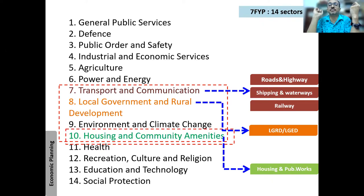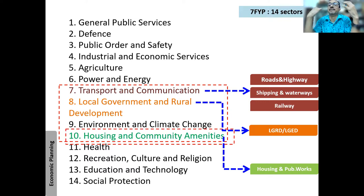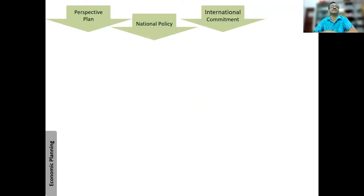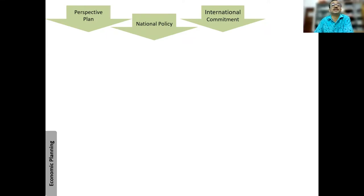We have the Local Government and Rural Development (LGRD) ministry, which spends money at the municipal level. We also have the Housing and Public Works department. Unfortunately, they mostly do housing projects — they take lowland or agricultural land and convert it into residential use. The planning hierarchy runs from perspective plan down to national policy — for example, the goal to reach middle-income country status by 2040 — and then sector-specific policies on transport, housing, and so on.